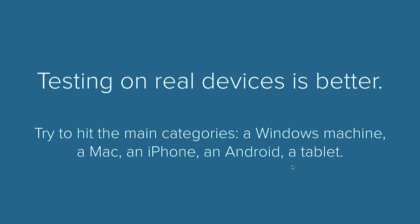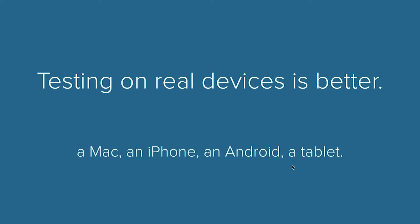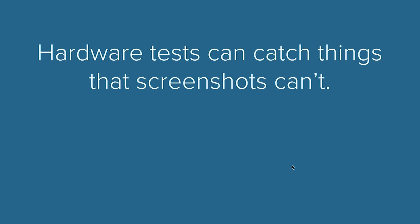Testing on real devices is always better than testing with a screenshot service. However, it just takes so much more time to have them all set up. Our testing philosophy is we try to hit the main categories — we test on a Windows machine, a Mac, an iPhone, Android, and tablet, and then we use screenshot services to hit all the individual email clients. The reason we test on a couple of physical machines is that on Windows, fonts can be a little different, and Windows machines generally have poorer monitors.